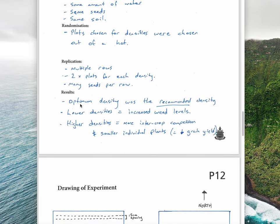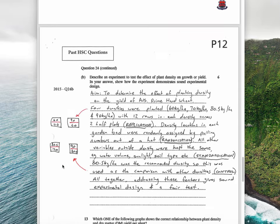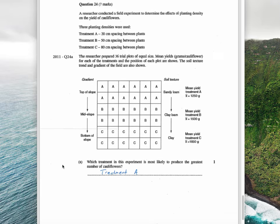Our results showed that the optimum density was actually the recommended density given in the first place. Lower densities led to increased weed levels, and higher densities led to more inter-crop competition. When you plant the wheat plants very far apart you get a lot of weed growth. When you plant them very close together you get smaller individual plants, and ultimately that would lead to lower grain yield. It also led to smaller leaves on each one.